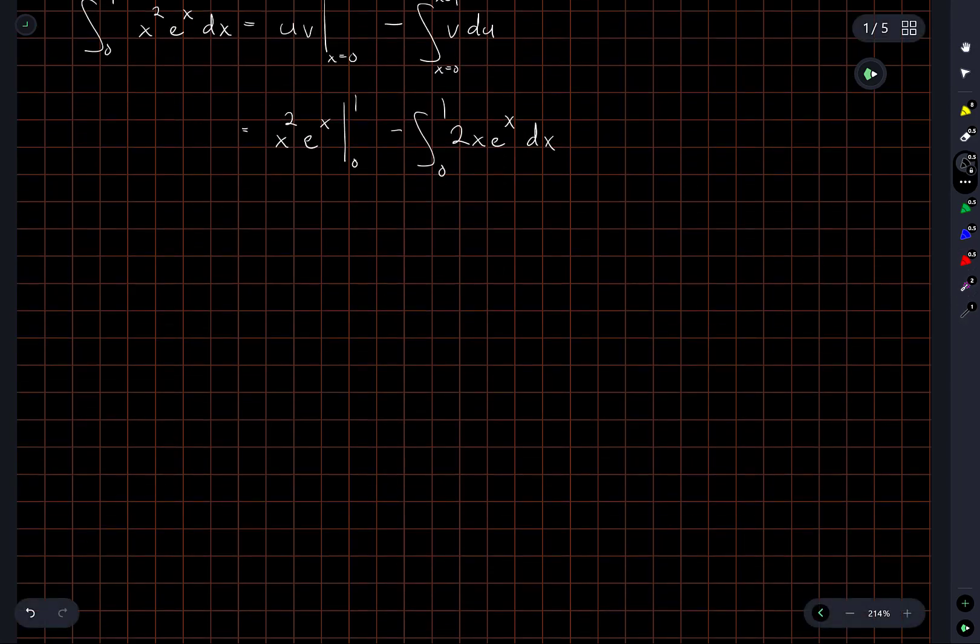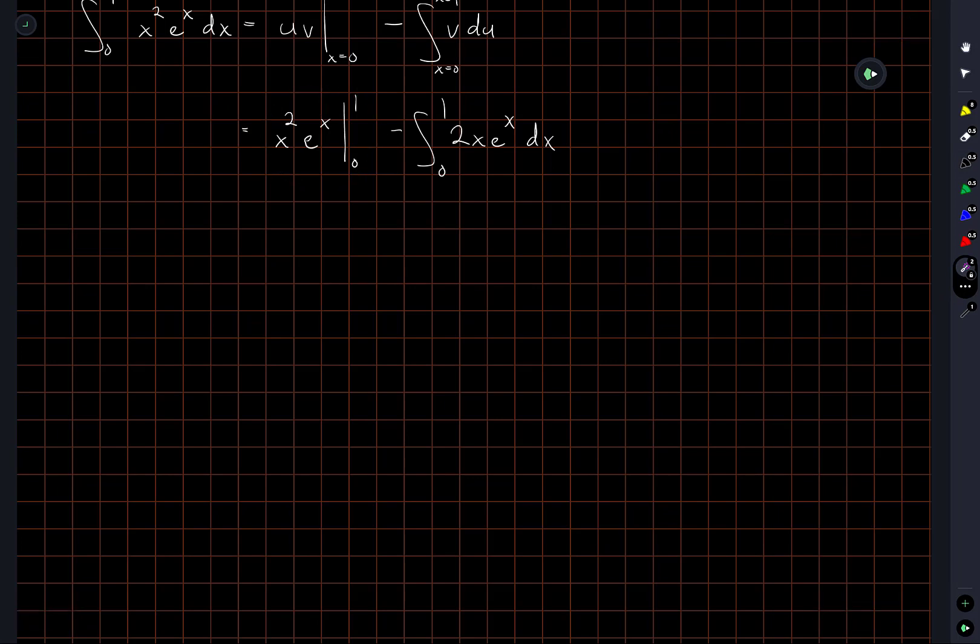All right, so the first part that I have here, I can just substitute 0 and 1 in for x and take the difference. And I'm left with another integral where, again, I'm just going to do everything by parts.